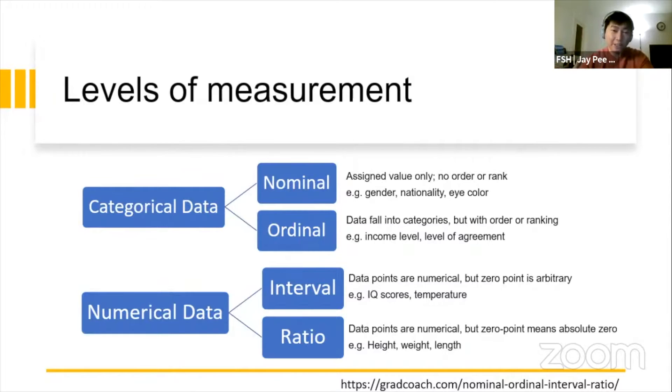While the ordinal data, there comes in the order or ranking. So, for example, the income level, let's say, the low income group, middle income group, high income group. And, for example, also the level of agreement, if you slightly agree or strongly agree. So, that is the ordinal type of categorical data.